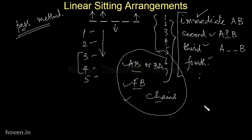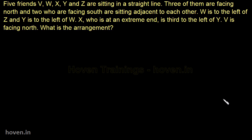Let me demonstrate this with the help of an example. This question says: five friends V, W, X, Y, and Z are sitting in a straight line. Three of them are facing north, and two who are facing south are sitting adjacent to each other. This is available to us, but I don't see any names here, so I can't place X, Y, or Z yet. My first pass starts with W.